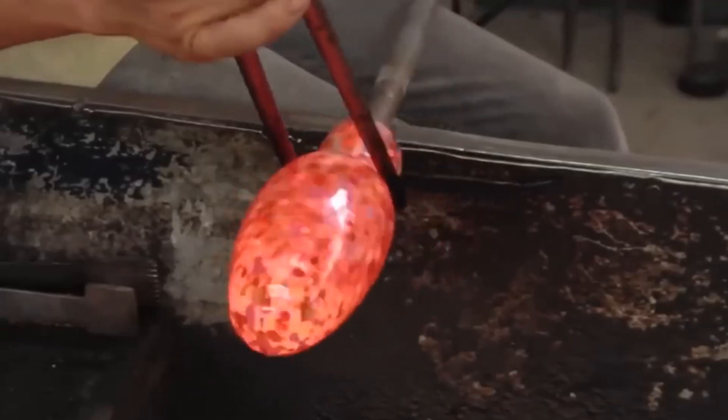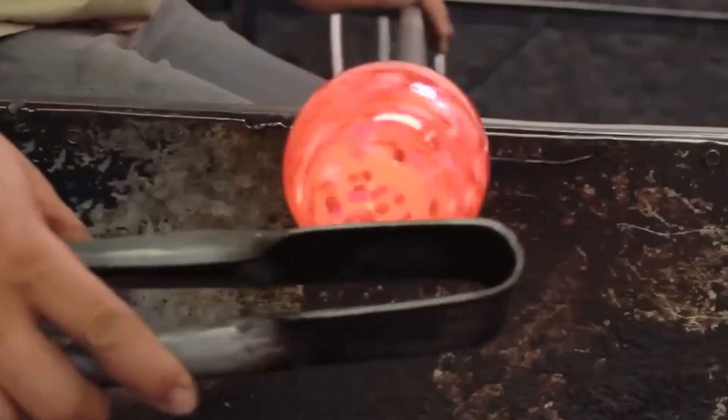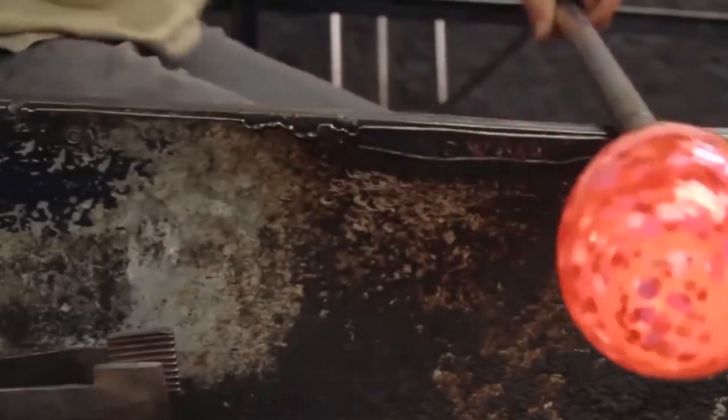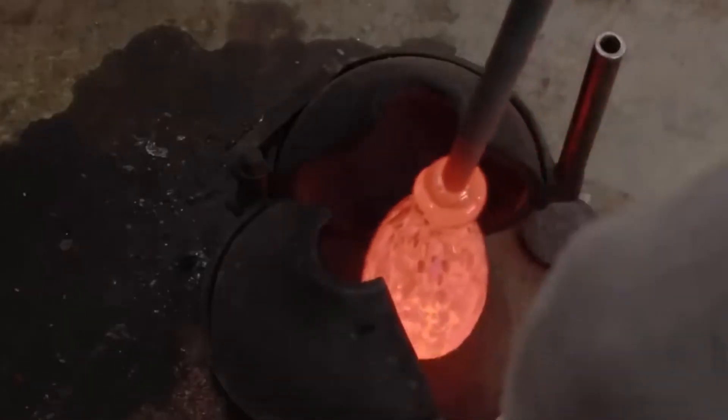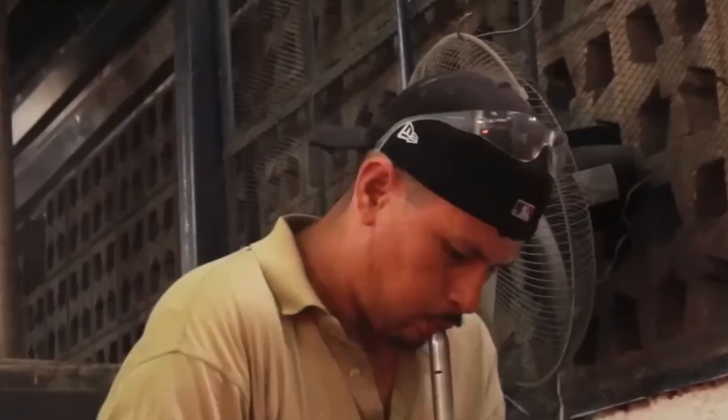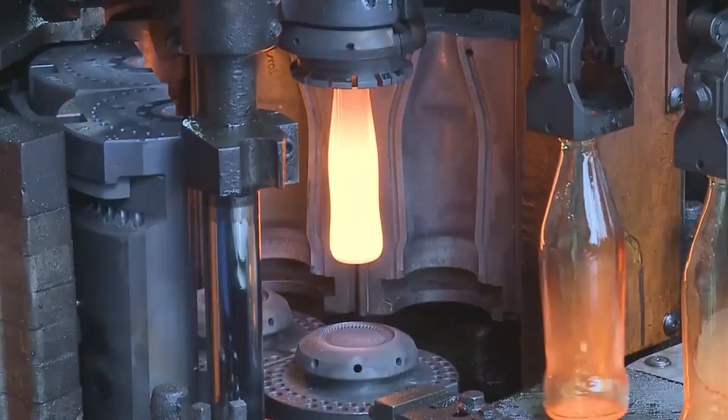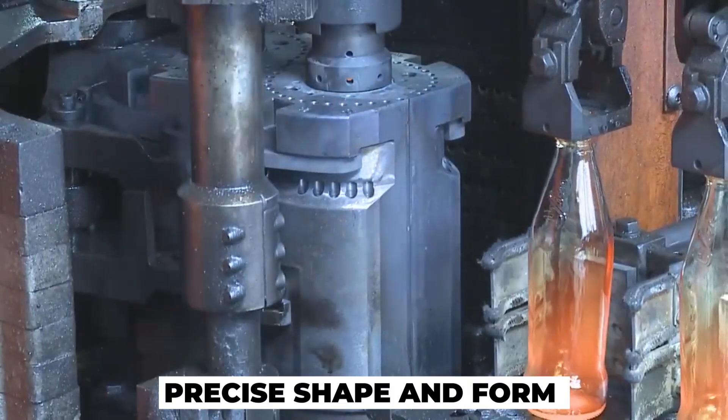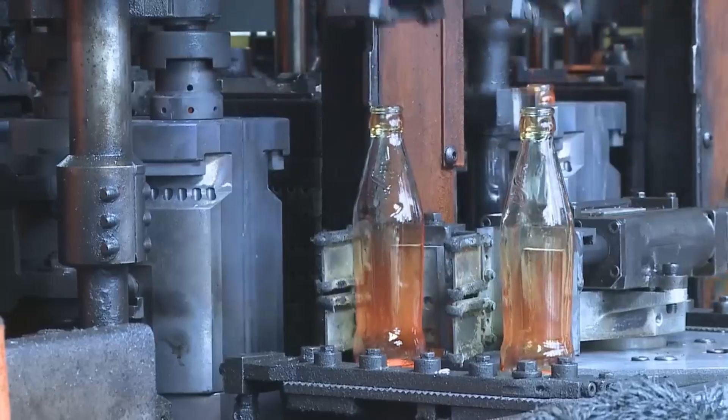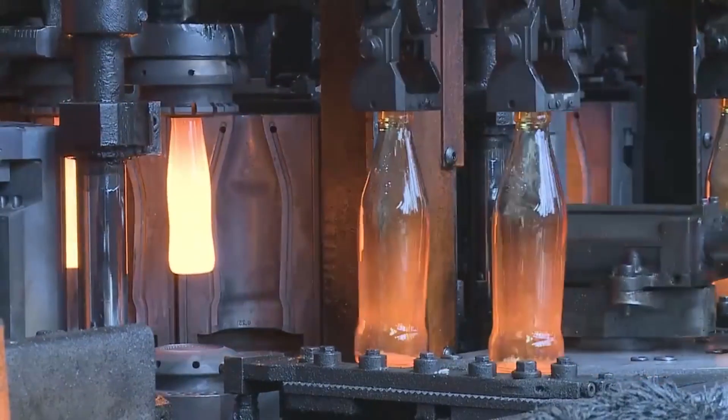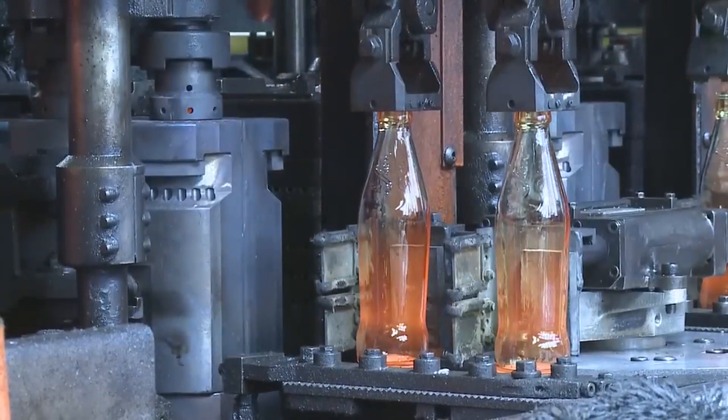Throughout the process, glassmakers utilize an array of tools, a combination of jacks, paddles and shears, to refine and perfect the bottle shape. Their skilled hands manipulate the molten glass, bringing their vision to life. As the glass cools within the molds, it solidifies, preserving the precise shape and form imparted by the glassmaker. The once molten liquid has now taken on the recognizable silhouette of a glass bottle.